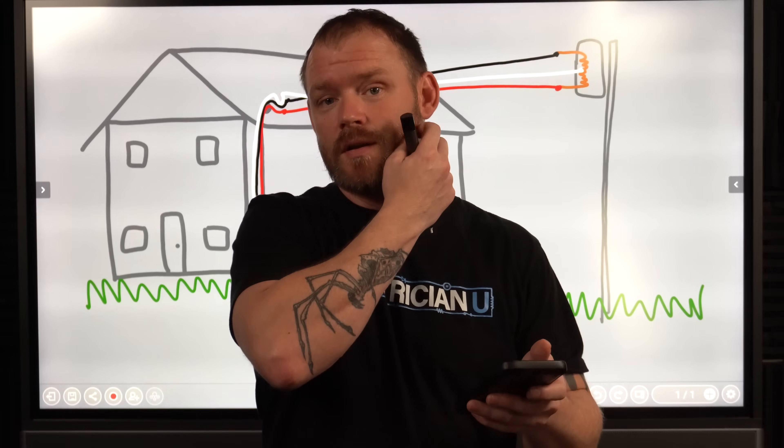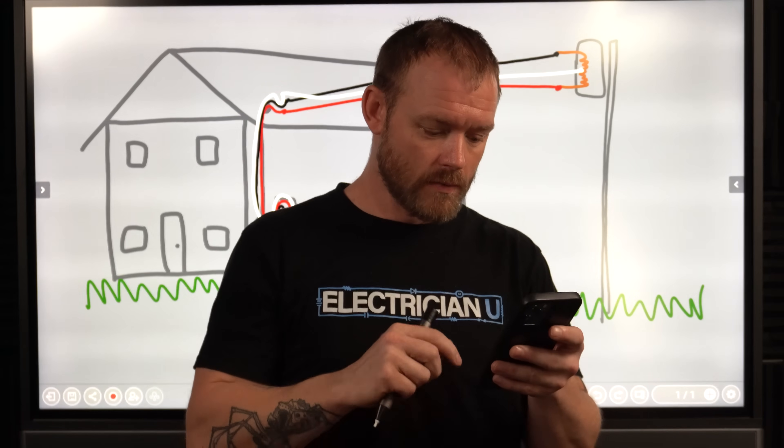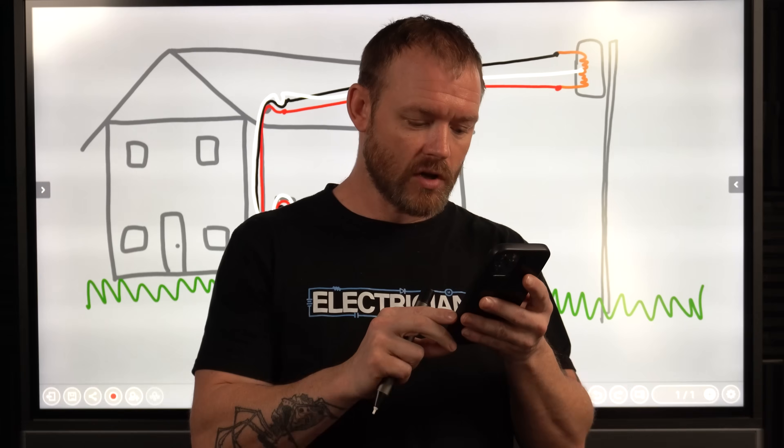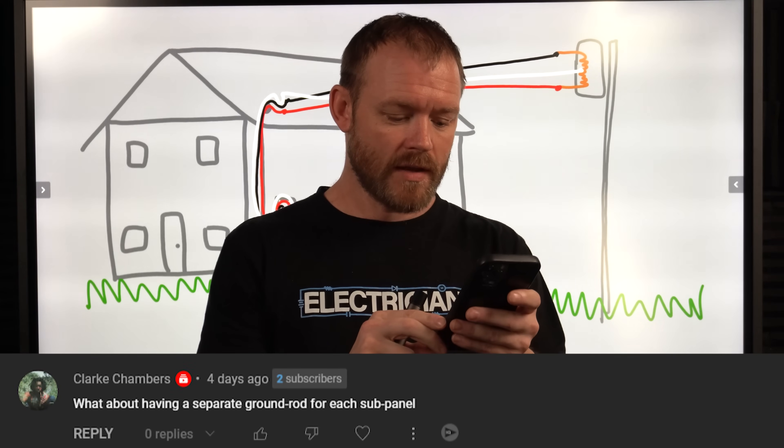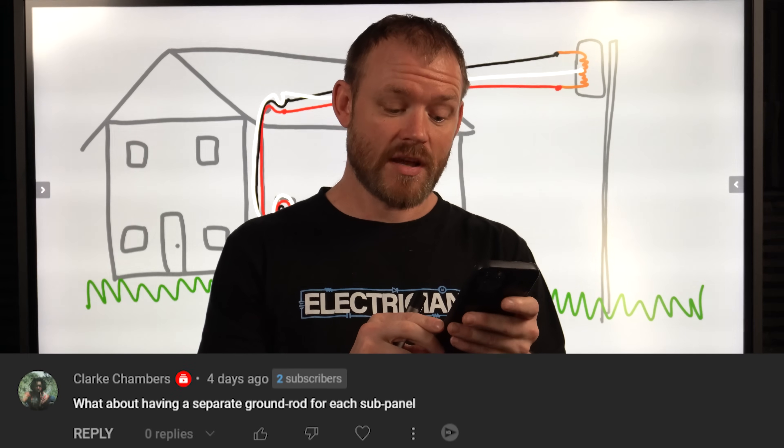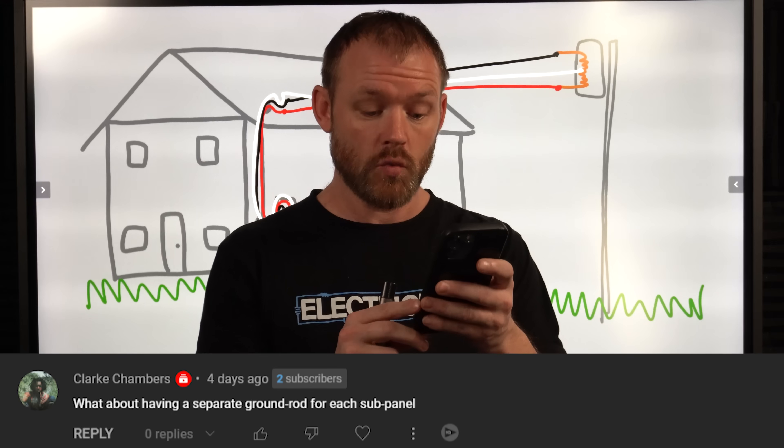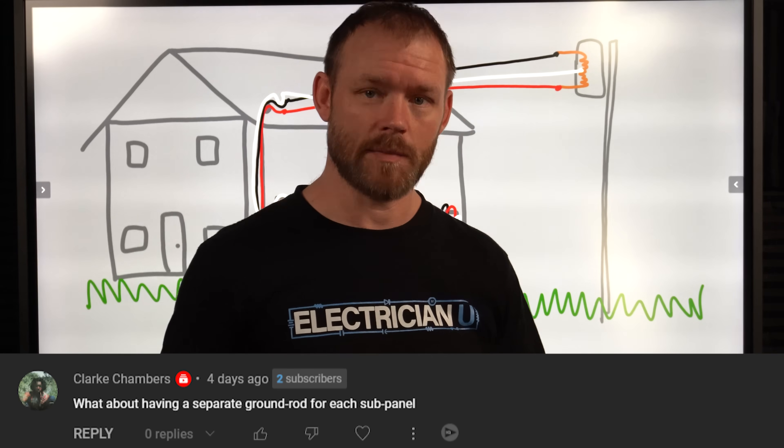What's up everyone? I got a good question from a different video. There was a comment under the video from Clark Chambers: What about having a separate ground rod for each sub-panel? He was asking on the video, why do we bond at the service panel and not at the sub-panel?